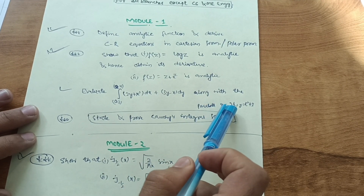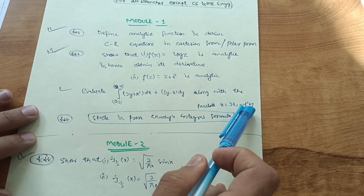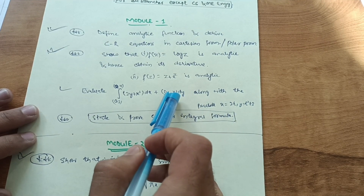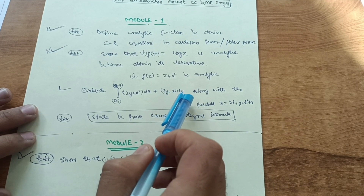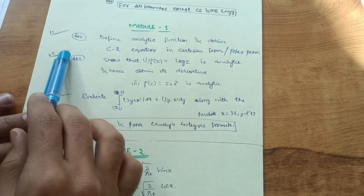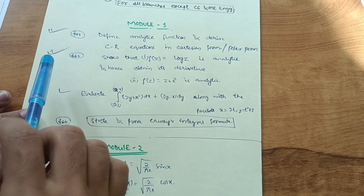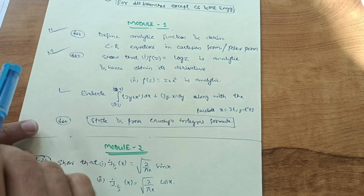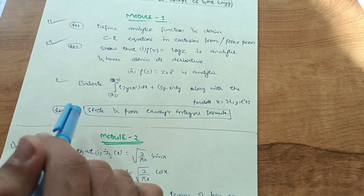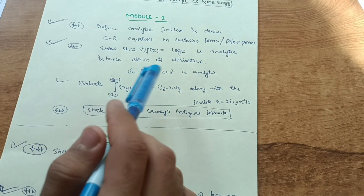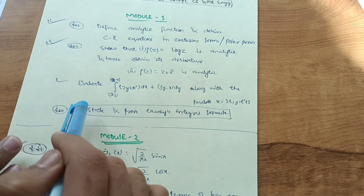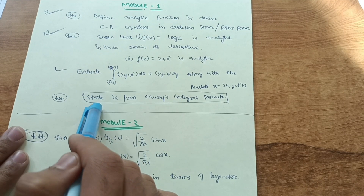For instance, the curve may be given as x = 2t, y = t² + 3. These types of questions will appear in the examination — focus on these two integral problems as they are the most important. Also, if you are weak in this area, one question that is definite is: state and prove Cauchy's Integral Formula.